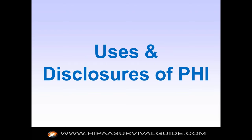Does a CE who has a BAA with an entity need another BAA with the BA's subcontractors? No, absolutely not. The covered entity has to have business associate contracts with its direct BAs. It's not responsible for, nor would it even be aware of, the subcontractor relationships that its BAs have. It's the BAs that have those relationships who are responsible for those business associate contracts. A covered entity is responsible for what I like to call their front-line BAs — people they directly do business with.